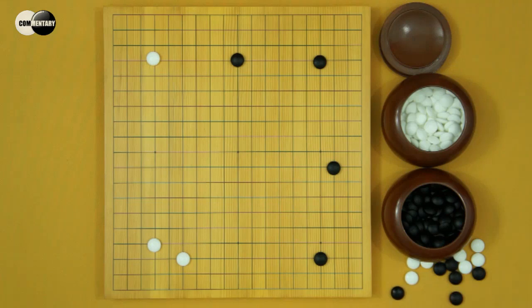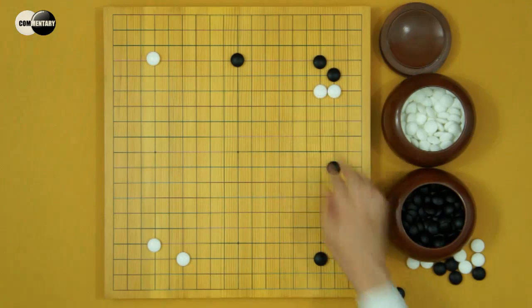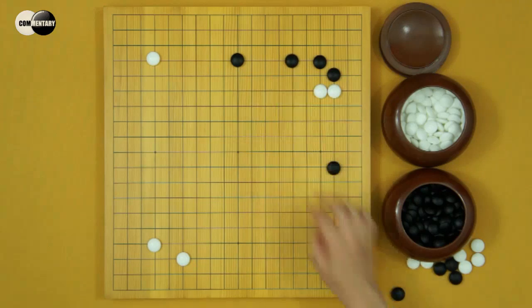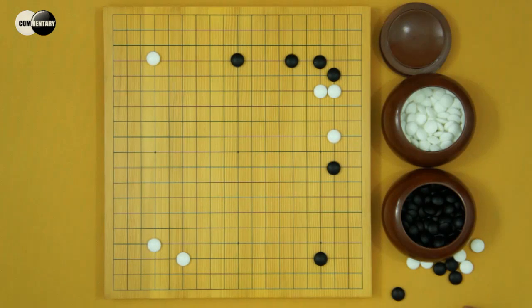And now, White will kakari here instead of invading sansan. Black kosumi. White nobi. Black jumps. White extends. Now we see, this stone's position is not very good.